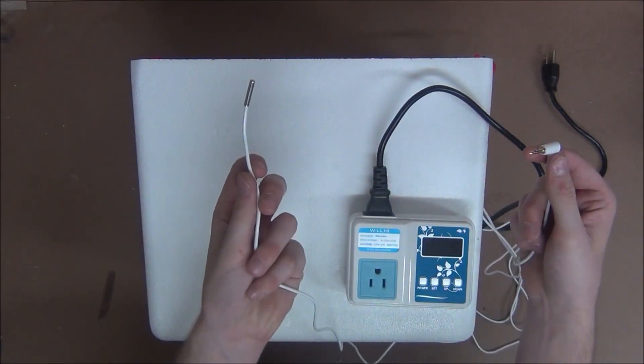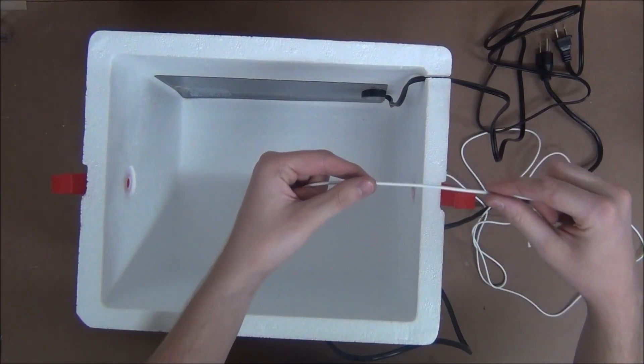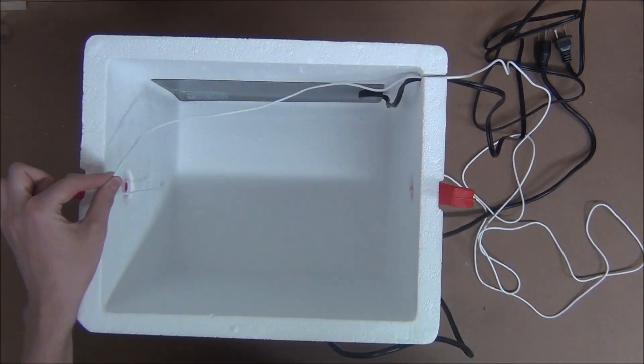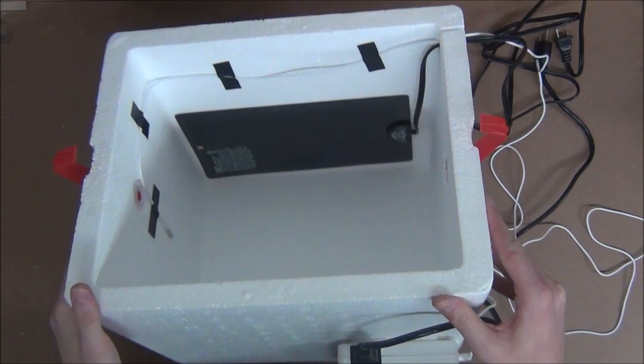Next, we'll plug in the probe, put it through the same hole as the power cord, and then use electrical tape to mount it towards the center of the cooler. Just like that.